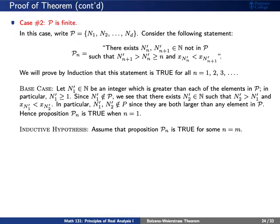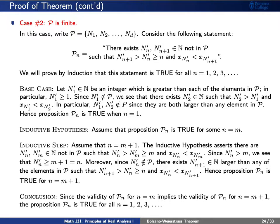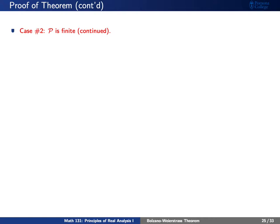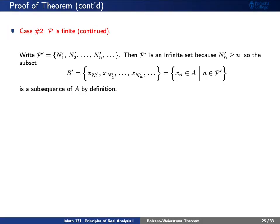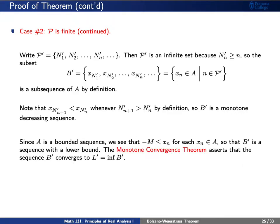Since the base case is true, let's assume proposition P sub n is true for some n equals m. To do the inductive step, the argument is almost exactly the same as in the base case. So we know this proposition is true for all positive integers n. Let P prime be the infinite set constructed by induction: capital N sub 1 prime, capital N sub 2 prime, and so forth. Constructing subsequence B prime from these indices gives a monotone decreasing sequence, and so by the monotone convergence theorem, this subsequence converges.